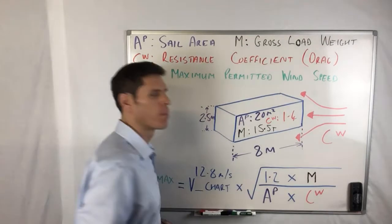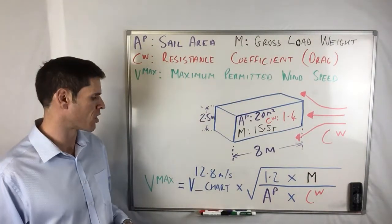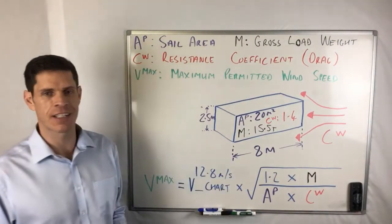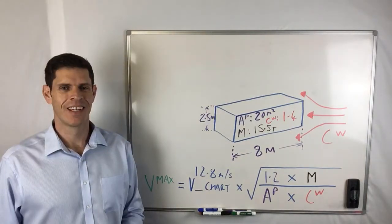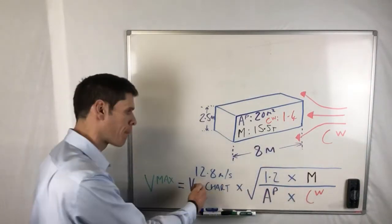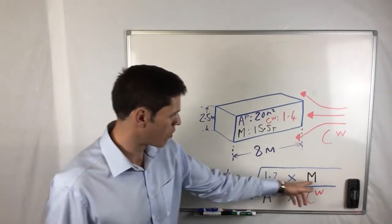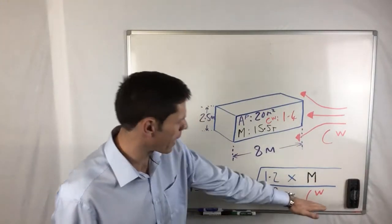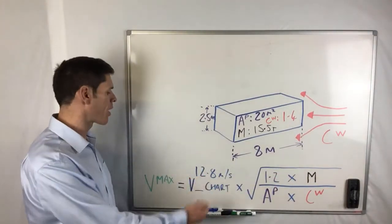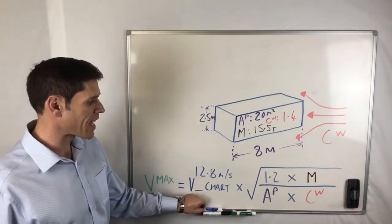So that's the figure that we've used in the pocket assistant on page nine. Now it's just about going through this in a simple way. The easiest way I find to go through this is actually work backwards, so work from this end and come back. What we'll do then is we'll start off with this and then divide it by this, then we can square root it, then we can multiply it by the V chart. That's going to give us our V max. Rather than working this way, let's start off then with 1.2 times the mass, times the gross load weight, so 1.2 times our 15.5.